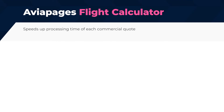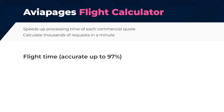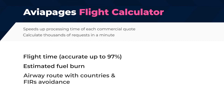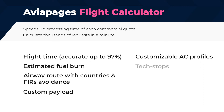How does the Avia Pages flight calculator benefit you? The software dramatically speeds up the processing time of each commercial quote by using a unique self-made algorithm that can calculate thousands of requests per minute. You get ready-to-use info about flight time accurate up to 97%, estimated fuel burn, airway route with countries and FERS avoidance, custom payload, customizable AC profiles, tech stops, wind impact, and CO2 emission.